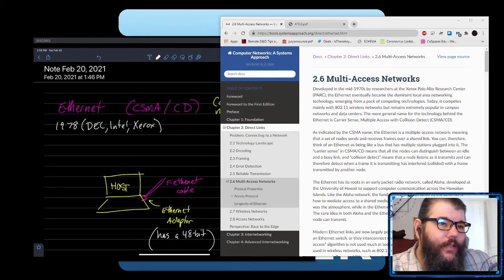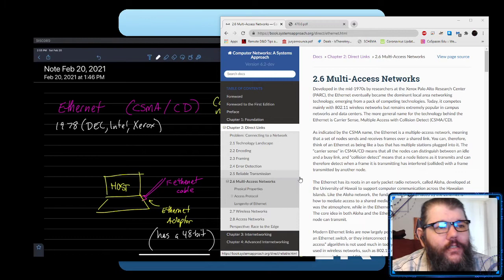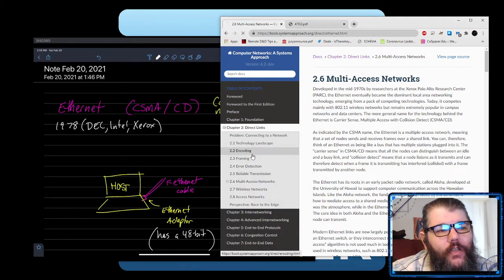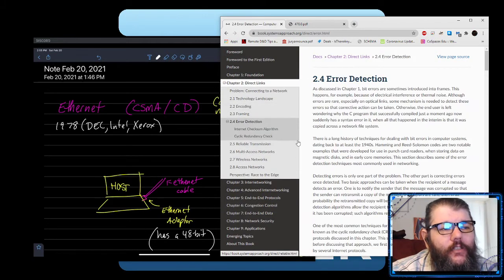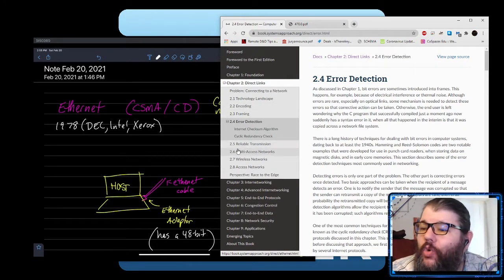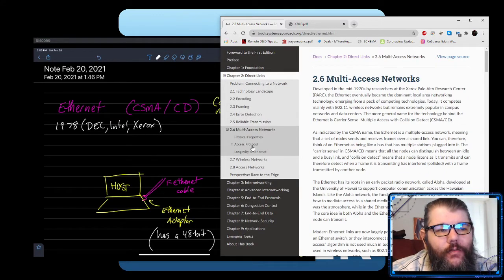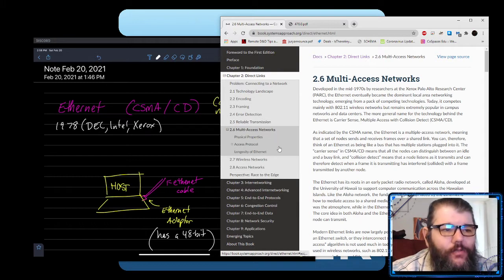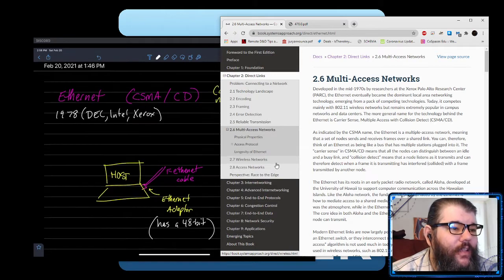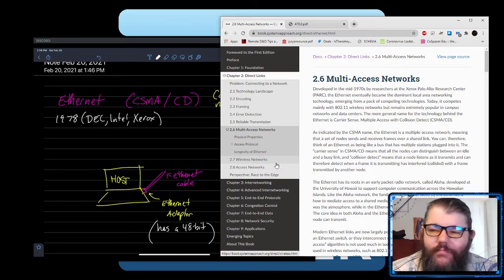All right everybody, we're back here with computer networks. What we're going to do this time is put together the things that we learned for encoding, framing, and error detection and push them all into an actual protocol that's used. We'll talk about multi-access networks, which leads into a discussion of wireless networks. It's so fundamental and critical that I feel like you have to understand these protocols and work with them.